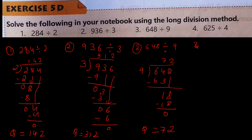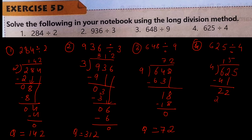Number 4: 625 divided by 4. 4×1=4, bring down 2 making 22. 4×5=20, 22 minus 20 is 2. Bring down 5 making 25. 4×6=24, 25 minus 24 is 1. So Q is equal to 156, R is equal to 1.